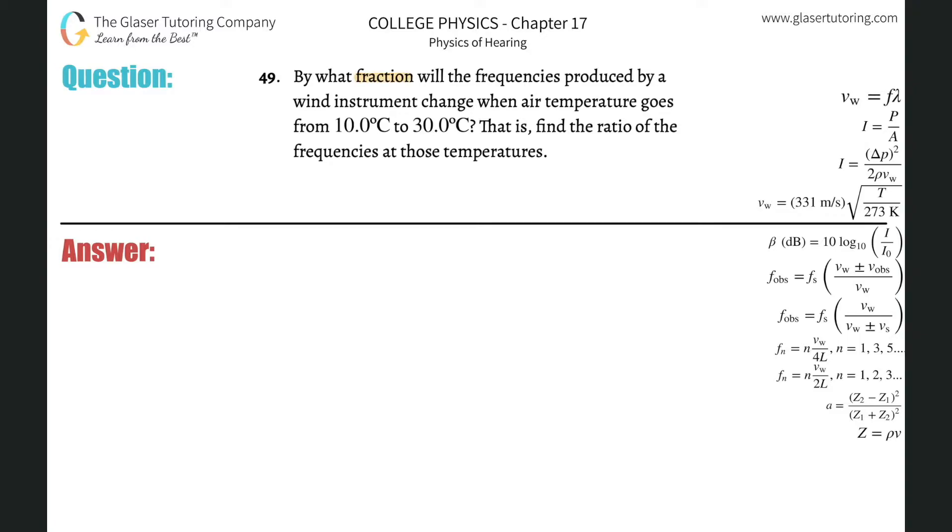Number 49: by what fraction will the frequencies produced by a wind instrument change when air temperature goes from 10 degrees Celsius to 30 degrees Celsius? That is, find the ratio of the frequencies at those temperatures.